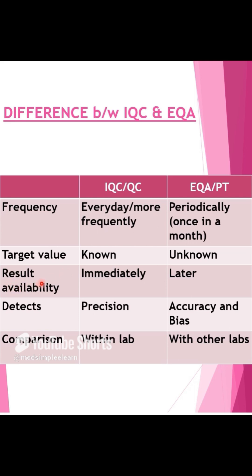The third basic difference is result availability. For IQC, results are available immediately within a few minutes, as IQC is mainly a tool for day-to-day monitoring of laboratory performance. While EQA results are available later, because EQA is a tool for long-term assessment of laboratory performance. IQC basically detects precision and short-term accuracy of results, whereas EQA gives an idea of long-term accuracy and bias.